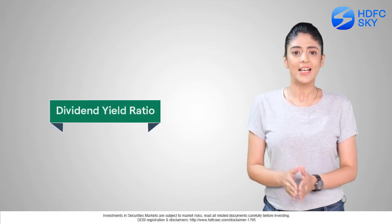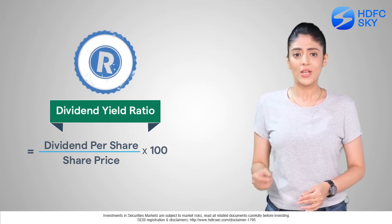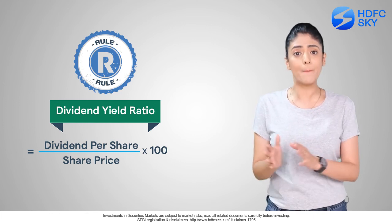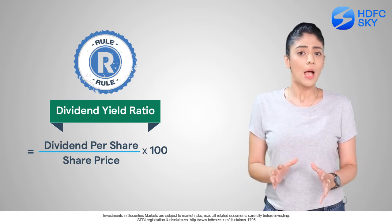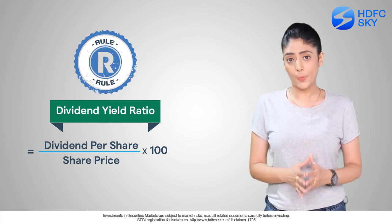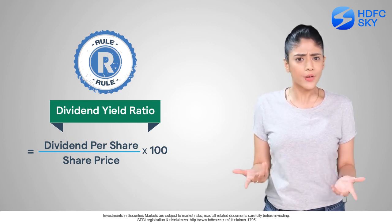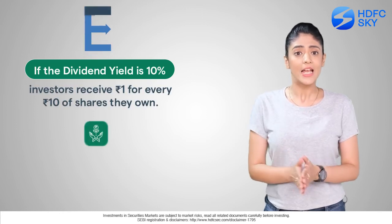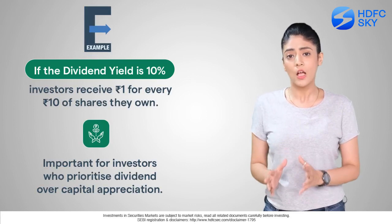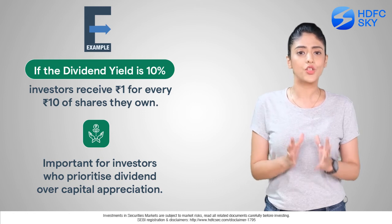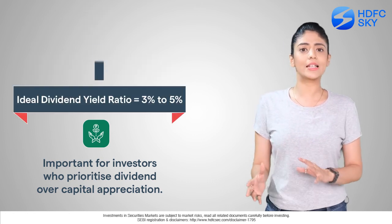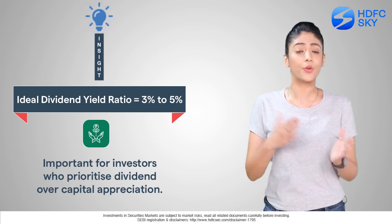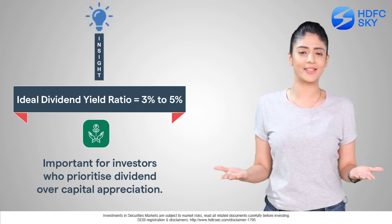Number nine: Dividend Yield Ratio. Dividend yield ratio indicates how much dividend a company gives compared to its stock price — for every rupee of stock price, how much dividend does the investor receive. For example, if the dividend yield is 10%, investors receive 1 rupee for every 10 rupees of shares they own. Investors considering stocks for regular income should look for a dividend yield between 3% to 5%.